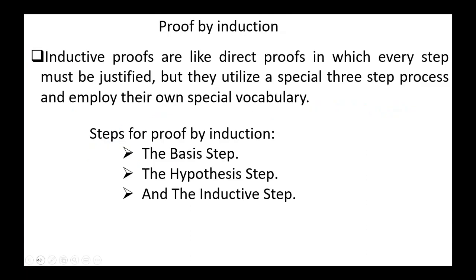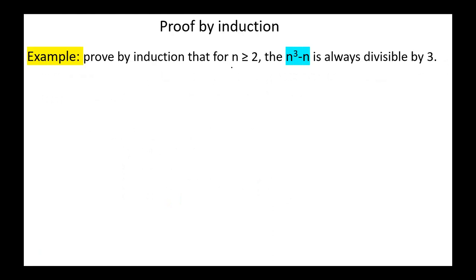The last method for today: proof by induction. Inductive proofs are like direct proofs in which every step must be justified, but they utilize a special three-step process and deploy their own special vocabulary. The steps for proof by induction are: the basis step, the hypothesis step, and the inductive step. Example: prove by induction that for n greater than or equal to 2, n cubed minus n is always divisible by 3.